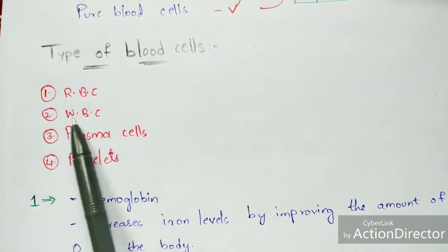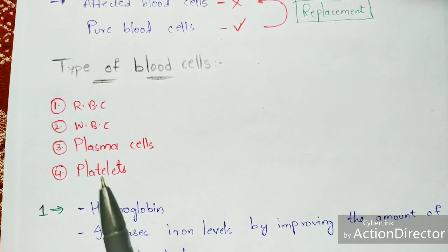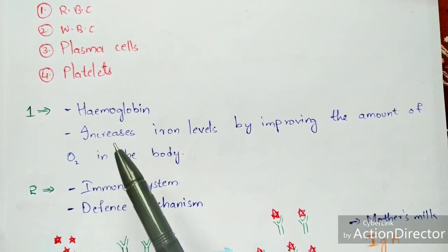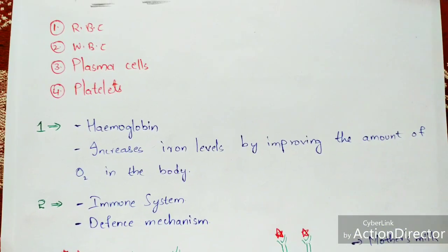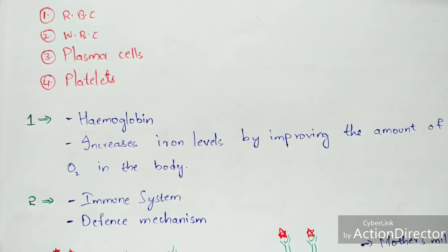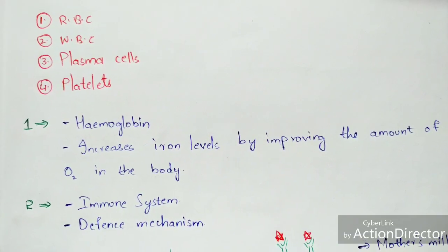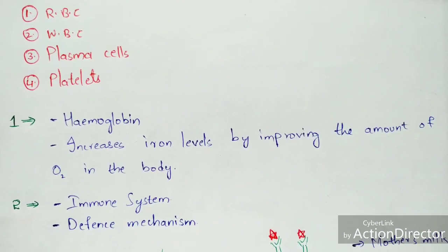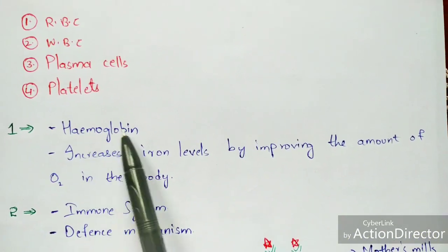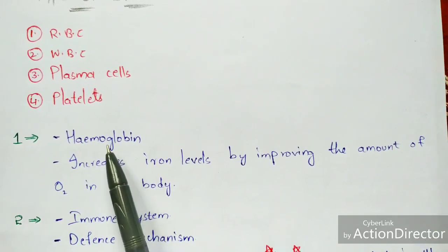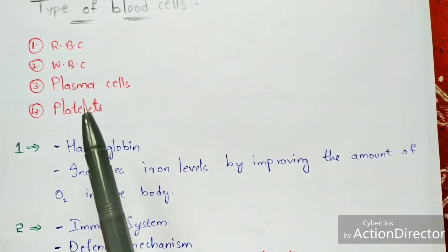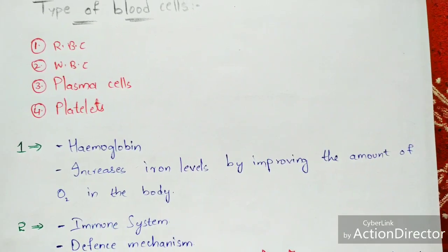There are four types of blood cells: red blood cells, white blood cells, plasma cells, and platelets. Red blood cells contain hemoglobin and increase iron levels by improving the amount of oxygen in the body. During respiration, the inhaled oxygen mixes with the blood and the red blood cells absorb that oxygen, transporting it to all tissues of the body. When hemoglobin decreases, the red blood cell count also decreases.